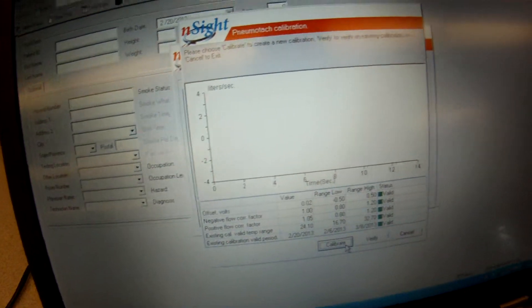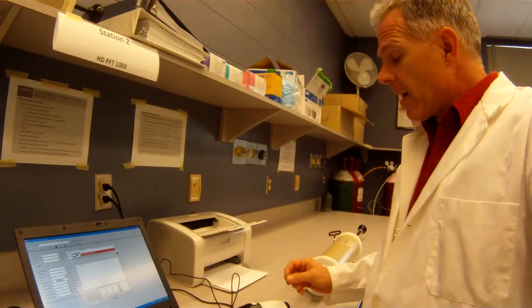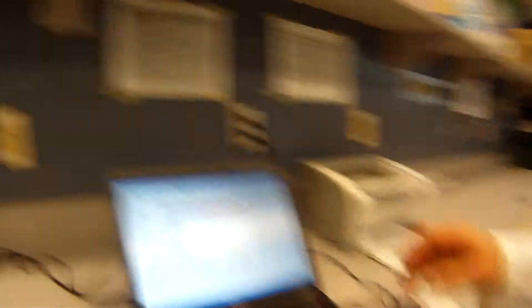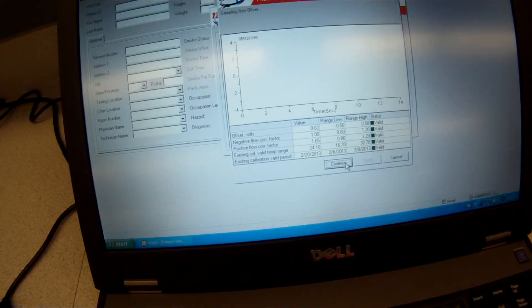I'll also show you how to verify this. So we click on calibrate and it says make sure that there's no flow through our device. Now that's important with all pneumotacs. Initially you want to make sure there's no flow through there. Then it comes back and says continue. So we go continue.